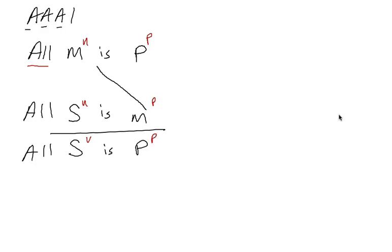Now we're going to test it for validity the first way. And that is by looking at the distribution of the little U's and little P's. So let's first look at our S's. Here it's universal in the conclusion and it's universal in the premise. That's good. That checks out. Now let's look at our middle term. It's universal at least once. That checks out. Now let's look at our P terms. It's particular in the premise and particular in the conclusion. That is fine. So this is valid.